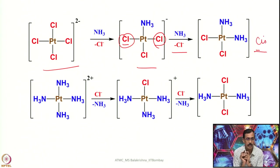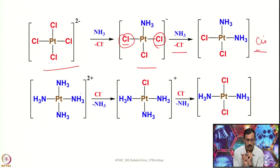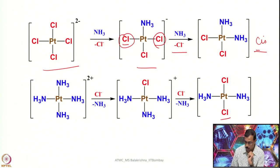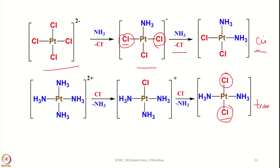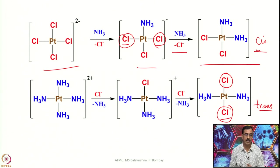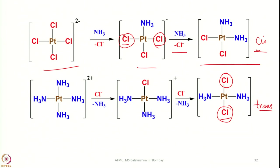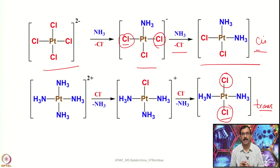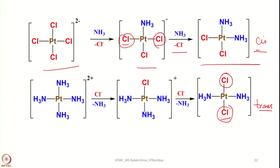In contrast, starting from the tetramine platinum(II) complex [Pt(NH₃)₄]²⁺ and adding Cl⁻: one ammonia is displaced, giving [PtCl(NH₃)₃]⁺. When a second Cl⁻ is added, it enters trans to the first chloride — because Cl⁻ has a stronger trans influence than NH₃ — resulting in the trans product. Thus tetrachloroplatinate treated sequentially with NH₃ gives the cis product, while tetramine platinum(II) treated sequentially with Cl⁻ gives the trans product. This was the beginning of the understanding and explanation of the trans effect.